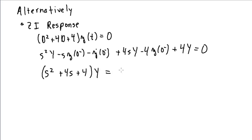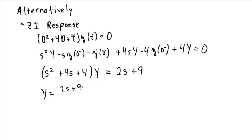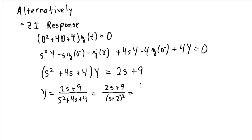Taking the remaining terms to the other side and plugging in initial conditions, we get 2s on one side, and then −y'(0⁻) − 4·y(0⁻) = 9 on the other. Solving for Y gives (2s + 9)/(s² + 4s + 4), or (2s + 9)/(s + 2)². The partial fraction expansion gives 2/(s + 2) + 5/(s + 2)².